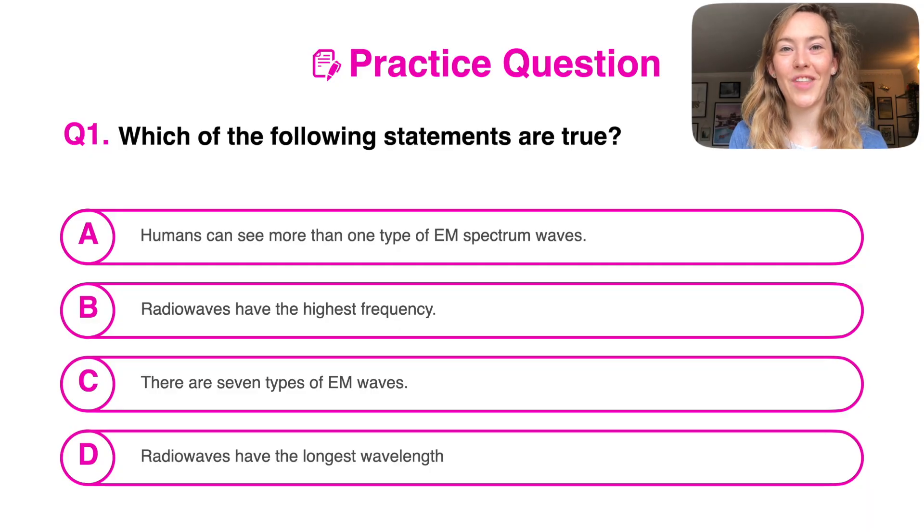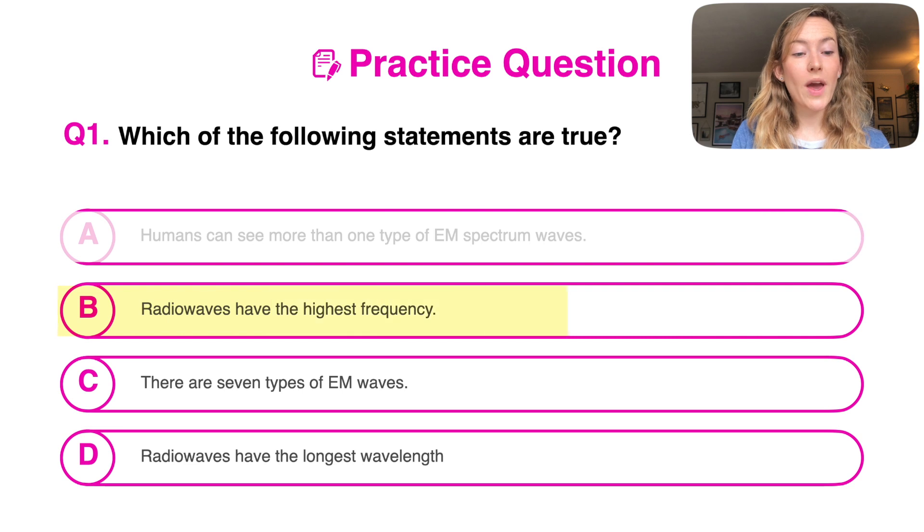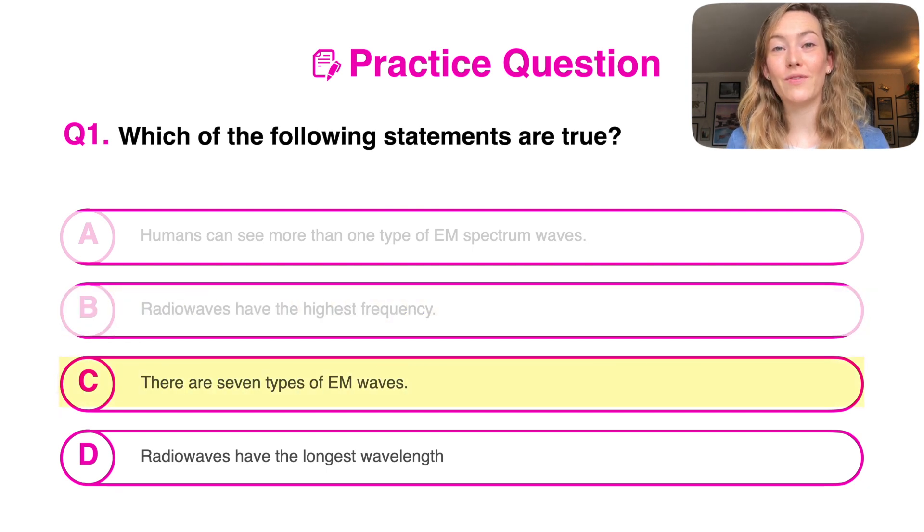Let's have a go at a quick practice question. We've got options and we need to select which ones are true. Humans can see more than one type of electromagnetic spectrum waves. Well, they can't. We can only see the visible part of the spectrum. Radio waves have the highest frequency. Well, they don't. We've just had a look at this. They've got the longest wavelength. They've got the lowest frequency.